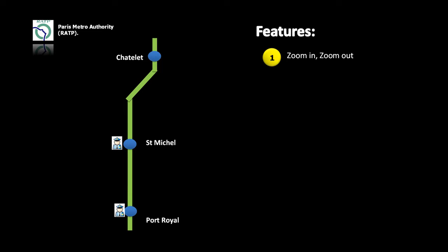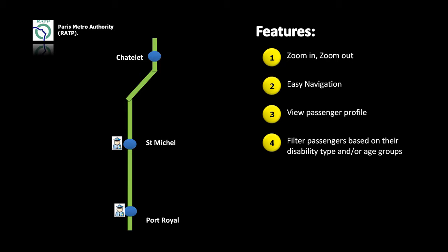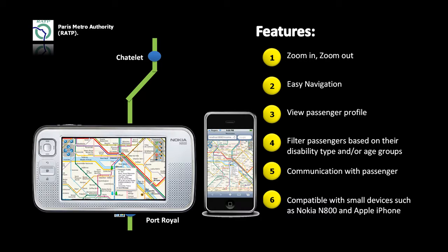In this project, three subway stations within the Paris Metro system are used as a model. The set of features implemented in this prototype include the ability to zoom in or zoom out to allow the agent to navigate the map easily, to view detailed passenger information at the touch of a button, to filter passengers based on disability type and/or age groups, to allow the agent to communicate with passengers, and to make the application compatible with portable devices such as Nokia handsets or the iPhone.